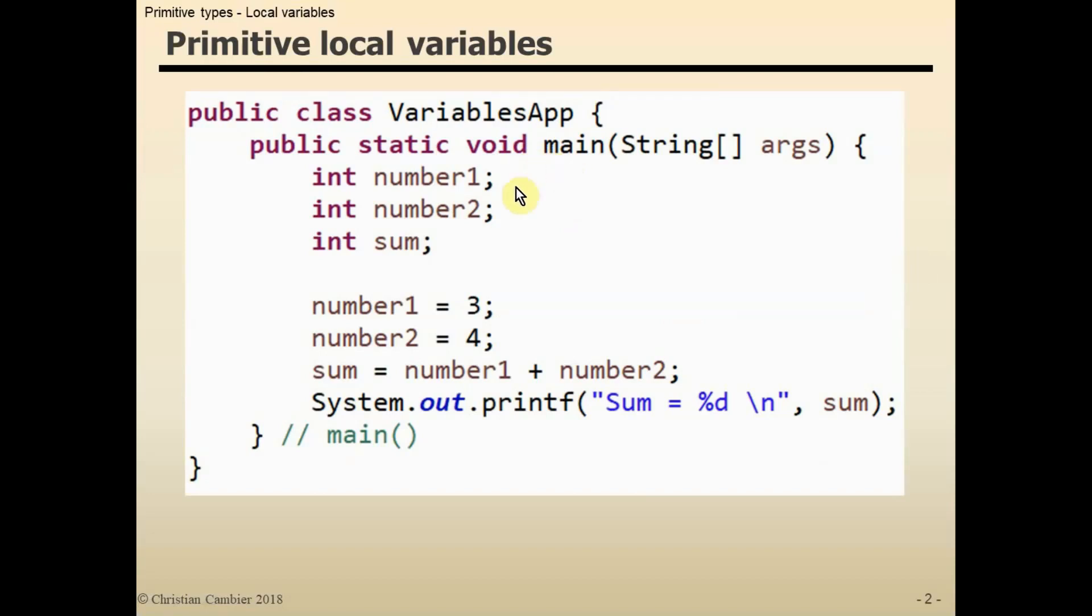In the main method there is a declaration of three integer variables: int number1, number2, and sum. After that, the assignment of some values to the variables - 3 to number1, 4 to number2, and then the sum of those two variables to the sum variable.